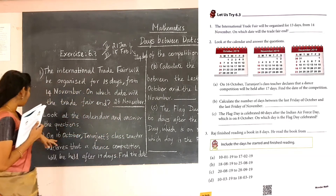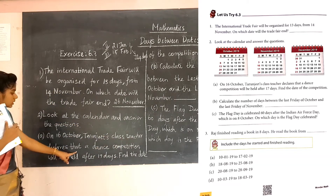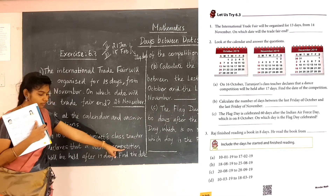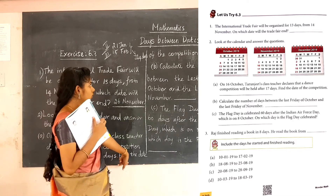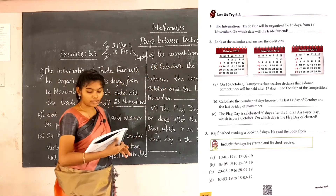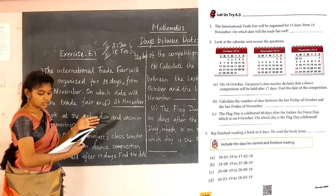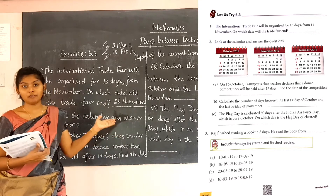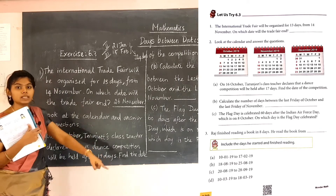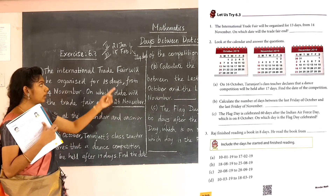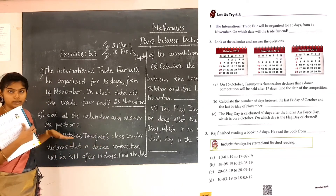First question: on 16 October, Tarunjit's class teacher declares that a dance competition will be held after 17 days. Find the date of the competition. On 16 October, the teacher is saying the competition will be held 17 days later.